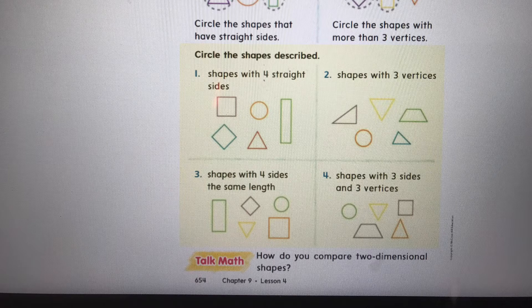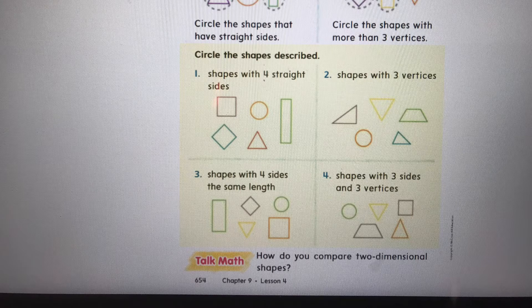Problem two says, shapes with three vertices, which means corners. That means I'm going to circle all the triangles in problem two. Problem three says, shapes with four sides the same length. Well, I know a rectangle has two different lengths, but squares have the same length all the way around. So I want you to take your pencil and circle the diamond-like shape and the square. Problem four says, shapes with three sides and three vertices. We know those are triangles. Circle those now.